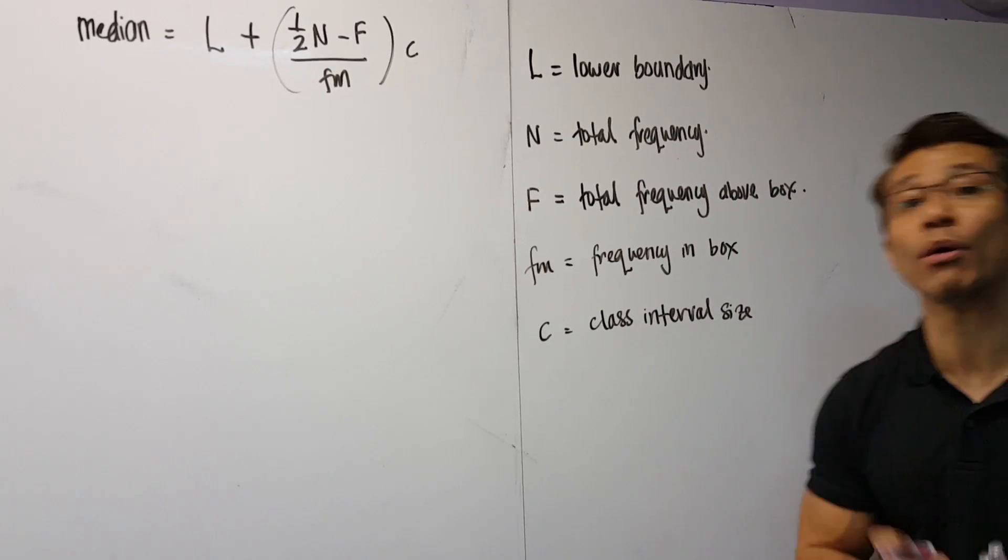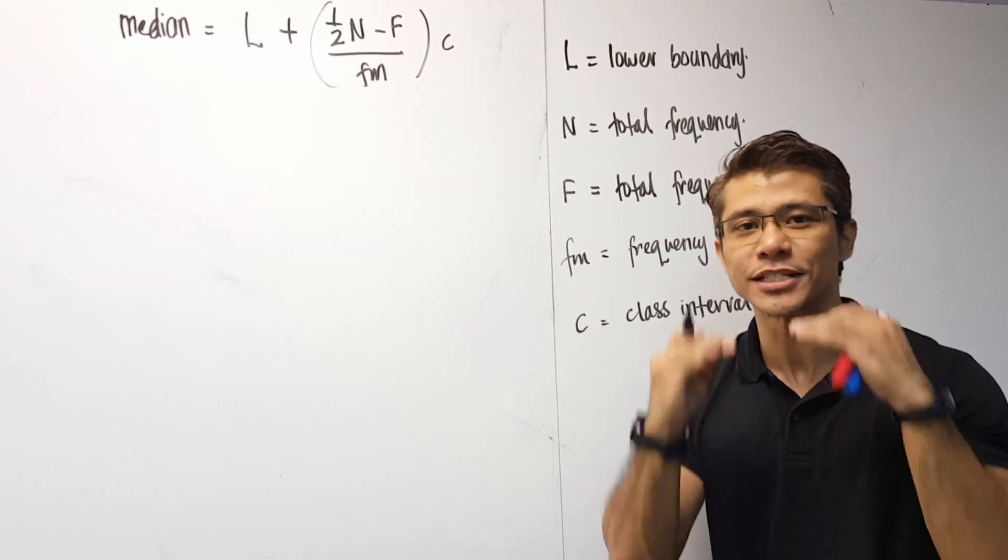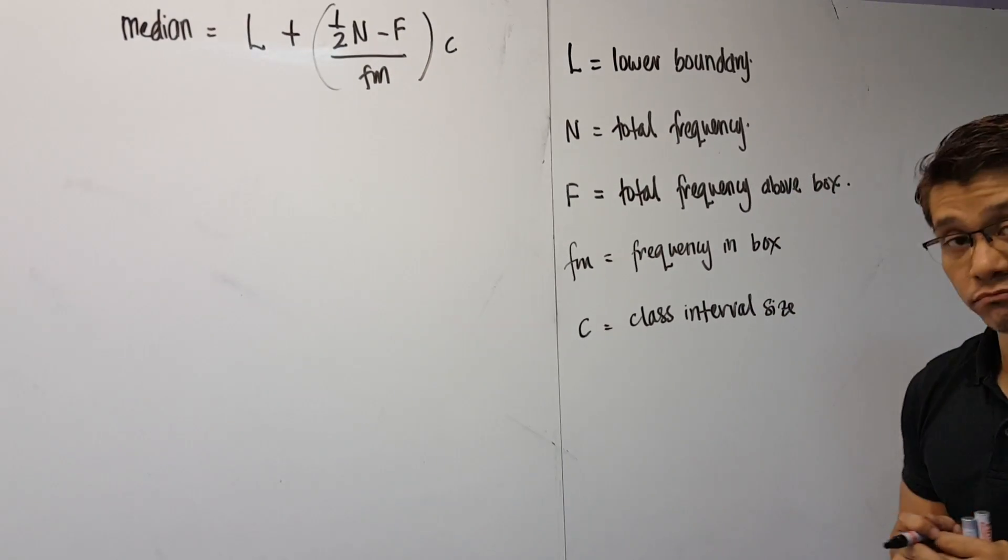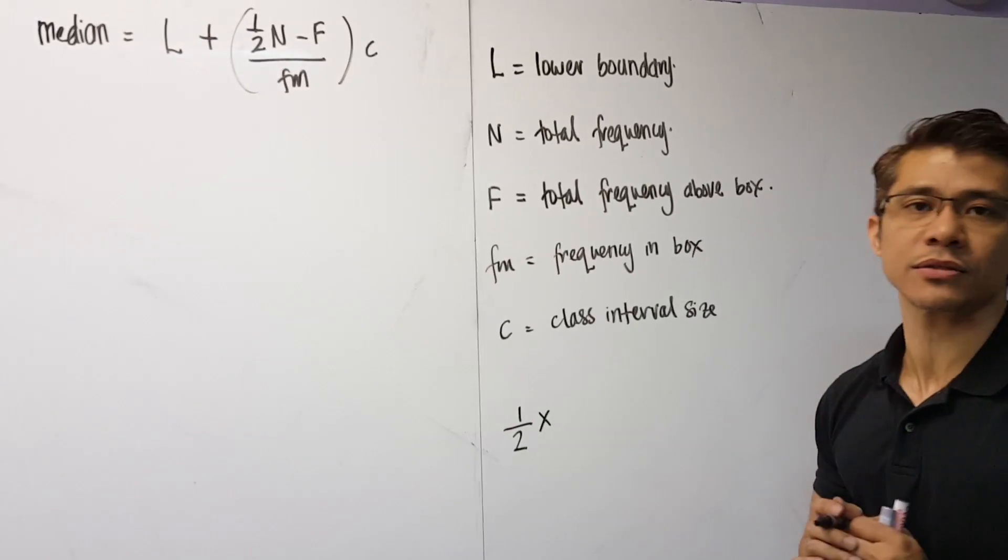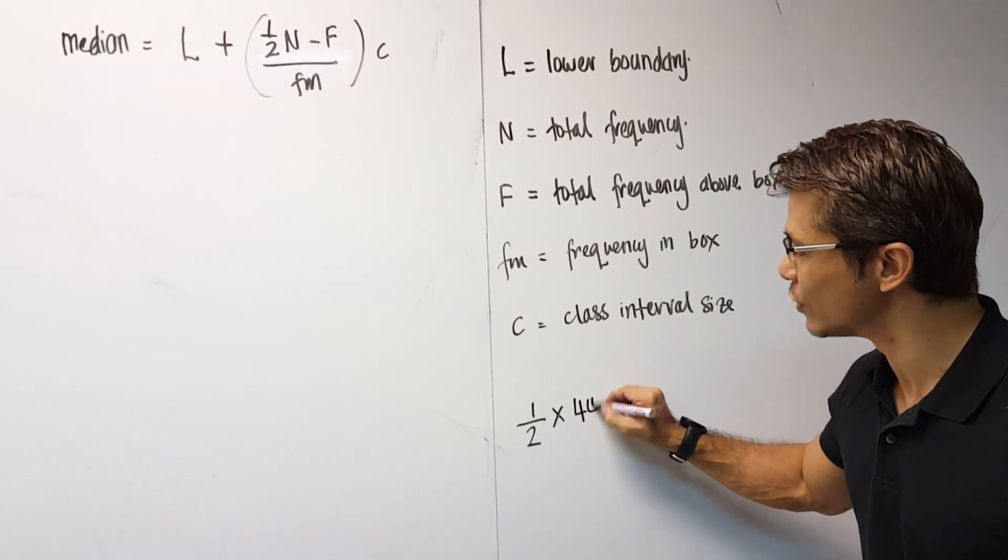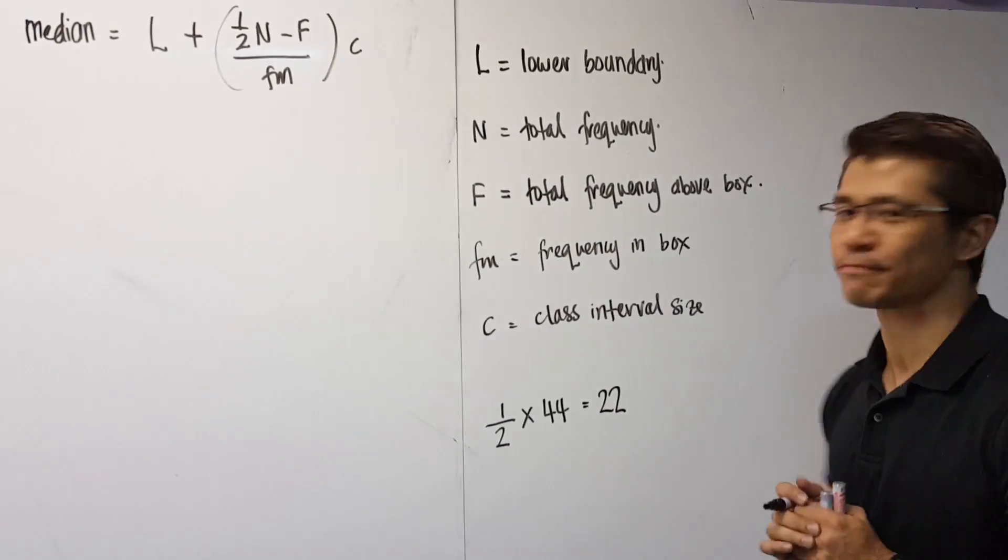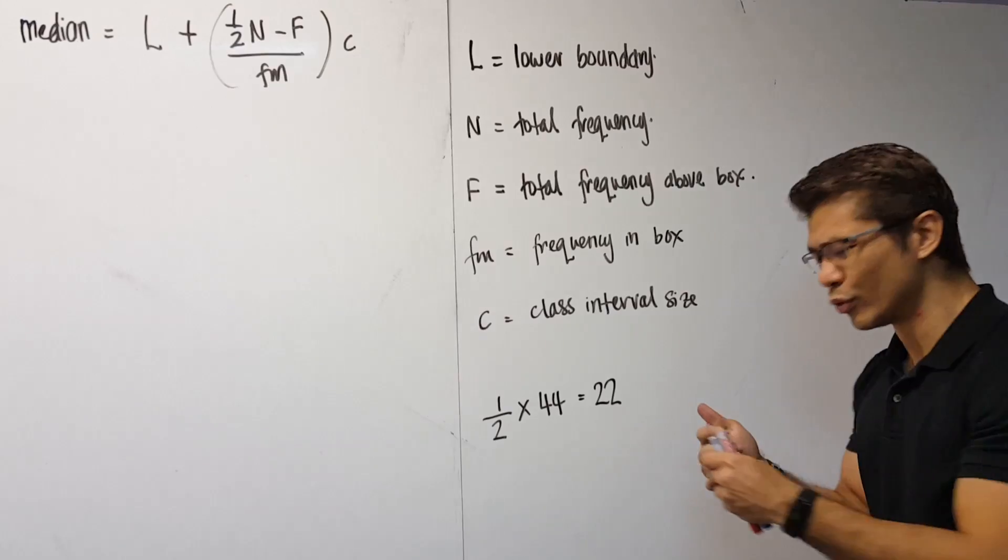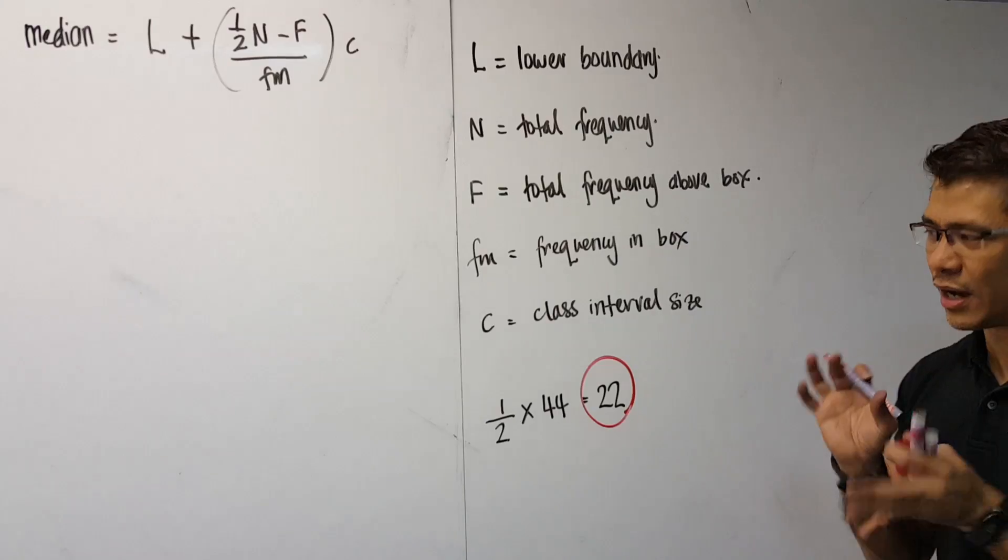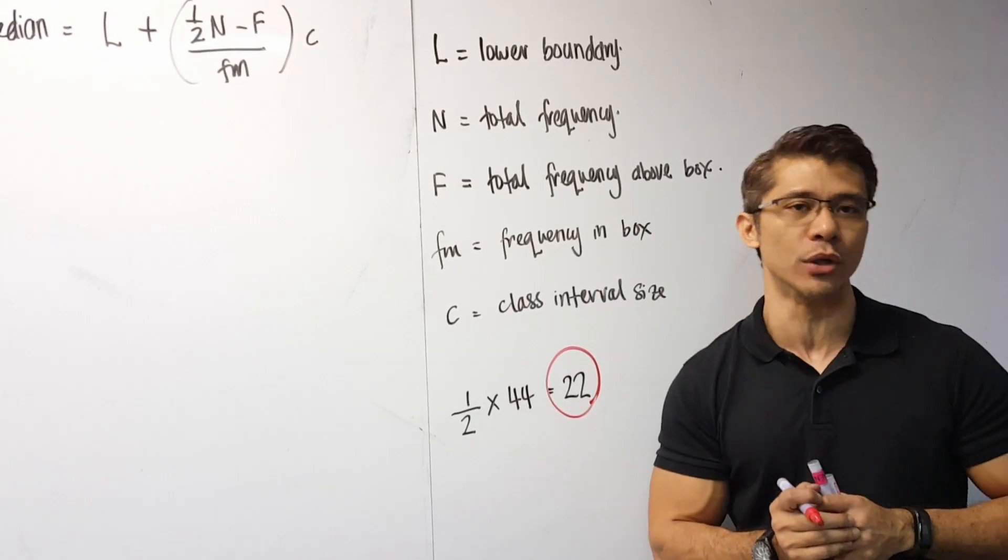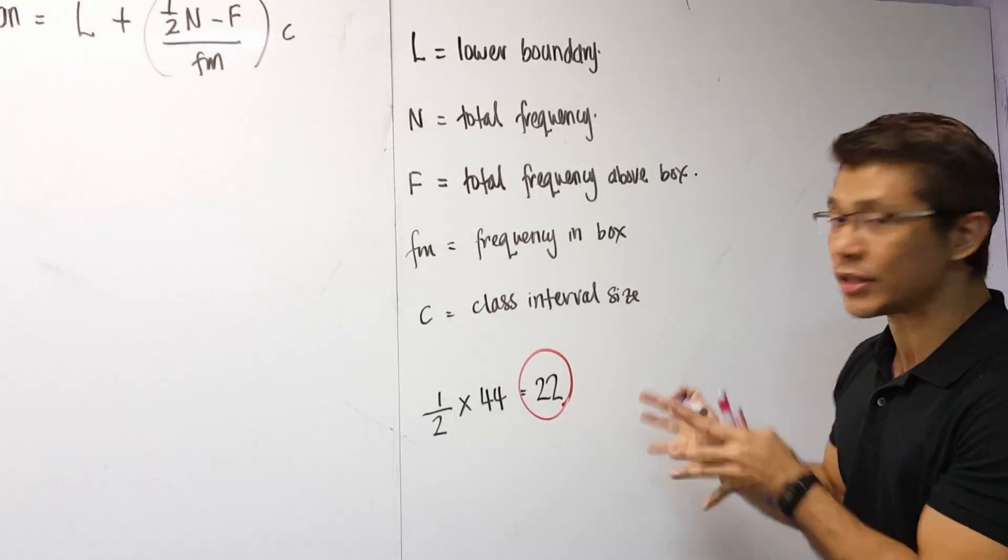Well, first and foremost, I need to find the box location. Now, to do that, remember, median is half. Median is middle. What is middle? Well, one over two, half. So I multiply this with the total frequency, which we found to be 44. This gives us 22. Now, this 22 is not the answer for the median. This 22 here just gives us a rough idea of where the median should be located. It gives us the box location.